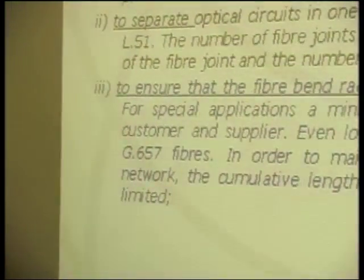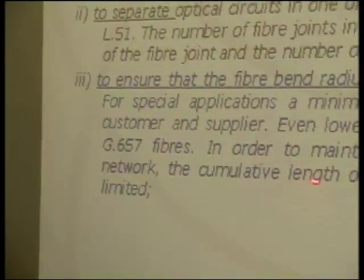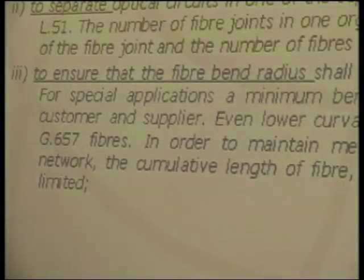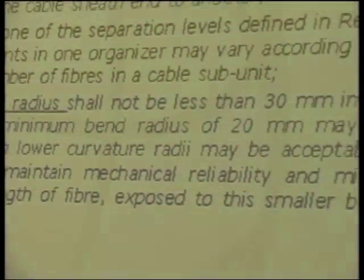It's important to separate optical circuits at separation levels as defined in recommendation L51. The number of fiber joints in one organizer may vary according to the size and shape of the fiber joint and the number of fibers in a cable subunit. It's necessary to ensure the fiber bending radius is not less than 30 millimeters in general applications. Some special applications using fiber G657 could allow a lower minimum curvature radius, but to maintain mechanical reliability and maximize network performance, the cumulative length of fiber exposed to smaller bend radii should be limited.